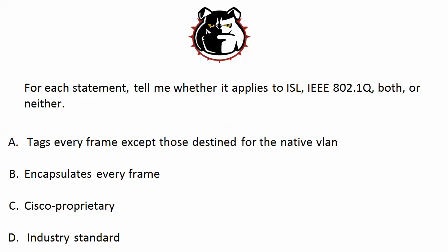.1Q's overhead is much less than that of ISL. ISL is Cisco proprietary, so C is ISL. You might think of the more popular protocols as being Cisco proprietary, but they're not. D — industry standard — is .1Q. So .1Q tags all your frames except those destined for the native VLAN, and it's the industry standard. ISL encapsulates every frame and is Cisco proprietary, giving it greater overhead.